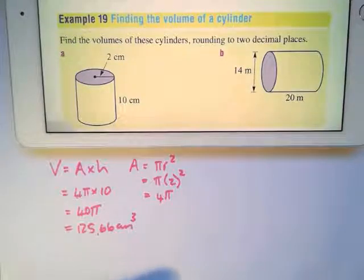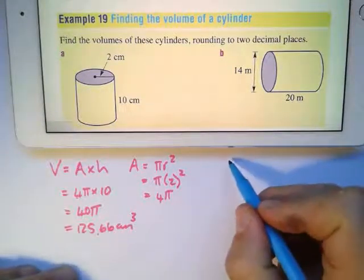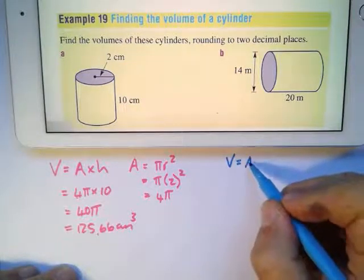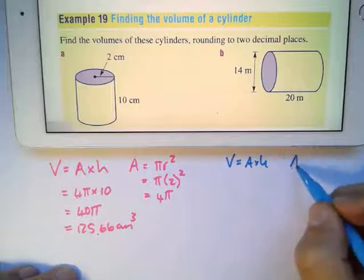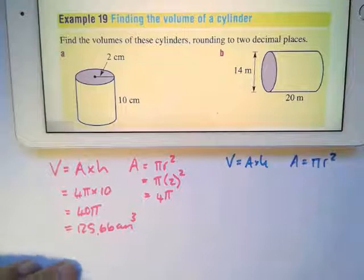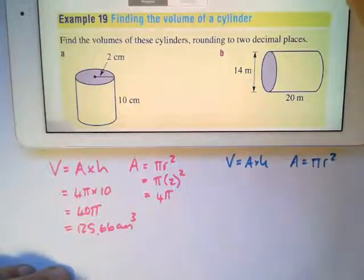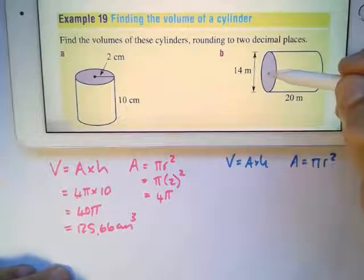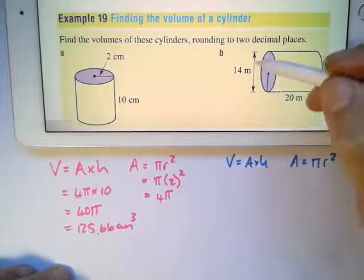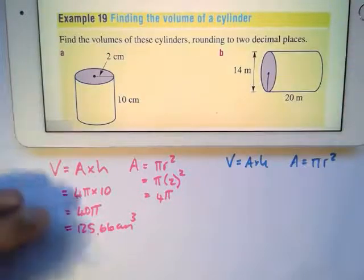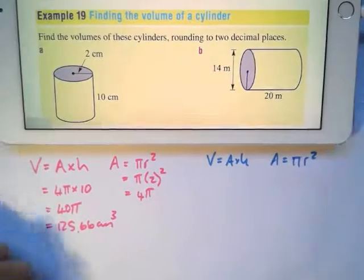Looking at the next one, volume equals area times height. The area is a circle, which means it's πr². Now the only problem I have is that the radius is from there to there, so if that is 14, I'll have to calculate r and show where I calculate that.